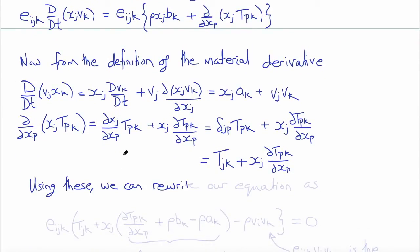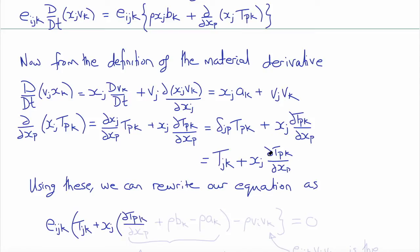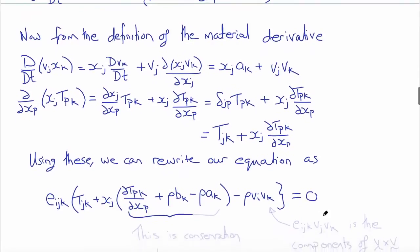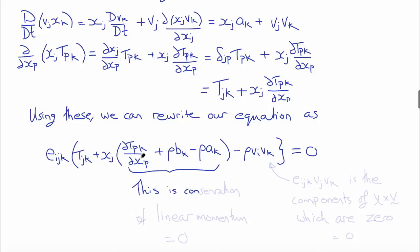Using these two expressions and substituting them into our equation above, we have e_ijk outside of everything, giving e_ijk times t_jk plus x_j times del t_pk/del x_p plus rho b_k minus rho a_k equals zero. The terms multiplied by x_j represent conservation of linear momentum, so that expression is zero because those terms equal the inertial force.